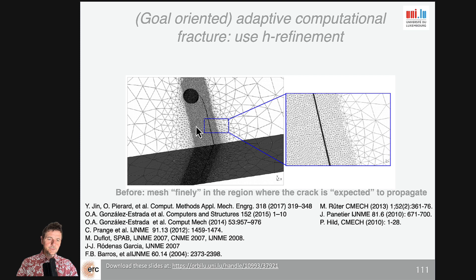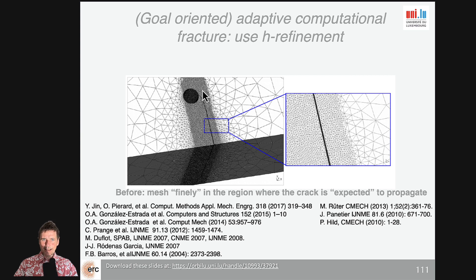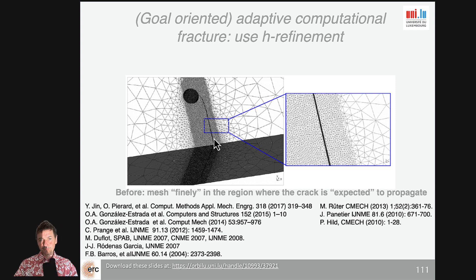What we are trying to do is the following. We have a very fine region around the crack, because this is what I did during my PhD. I had to look at fracture mechanics, so I had an initial penny-shaped crack here, it was propagating, but I needed to know in advance where the crack would go so I could refine the whole area where I expect the crack to go. This is really not nice because in reality you don't know where the crack is going to go — otherwise, why would you simulate the problem in the first place?